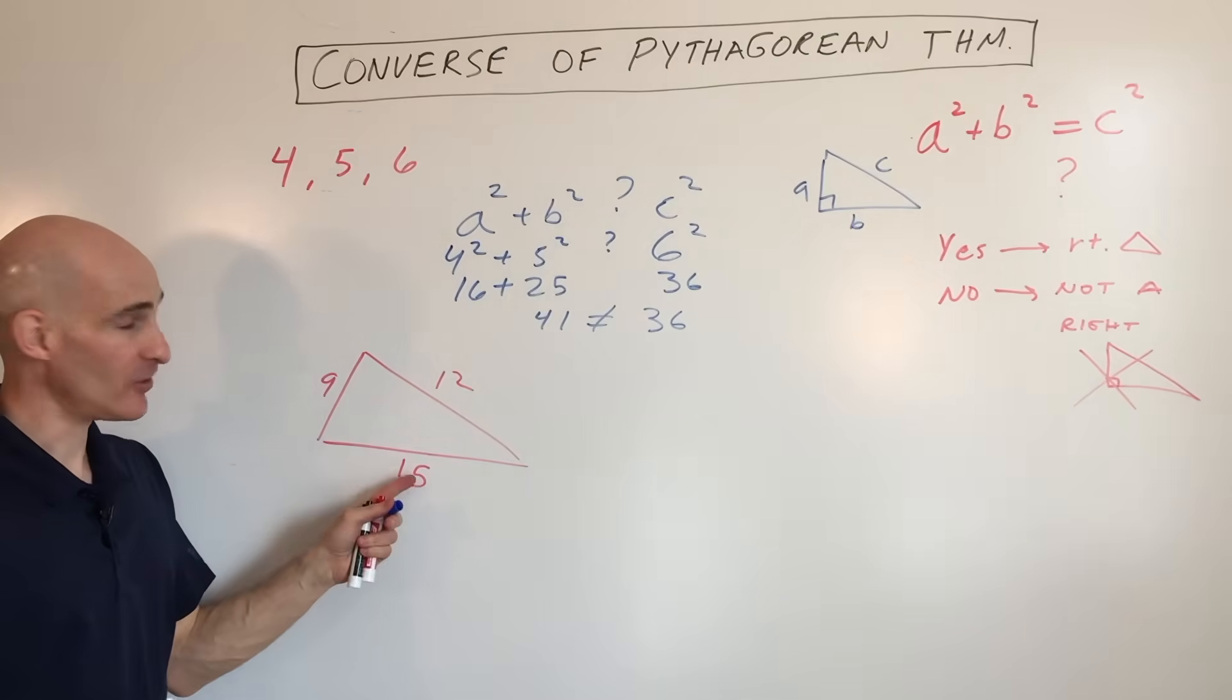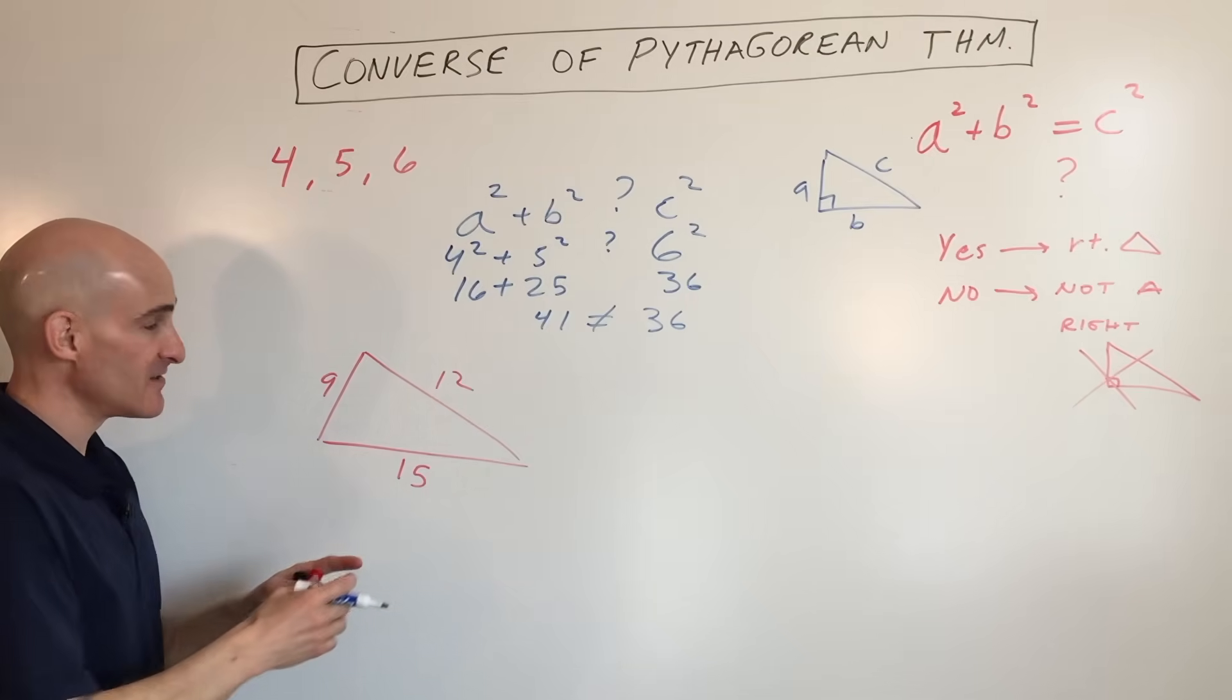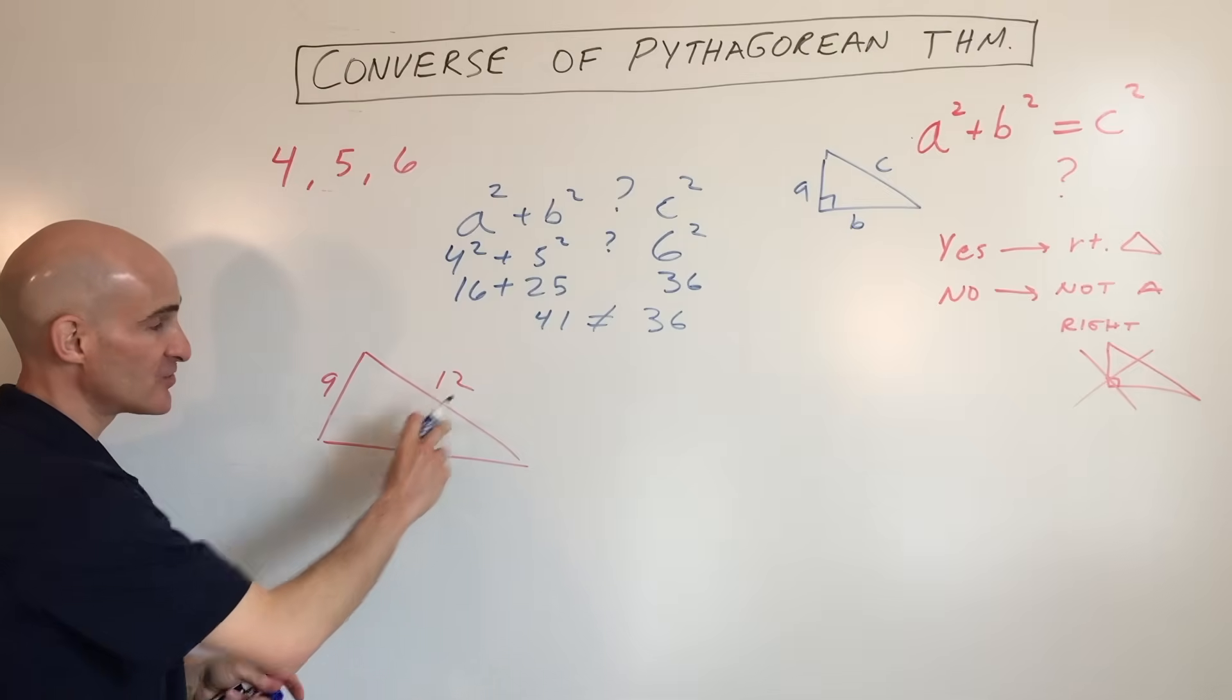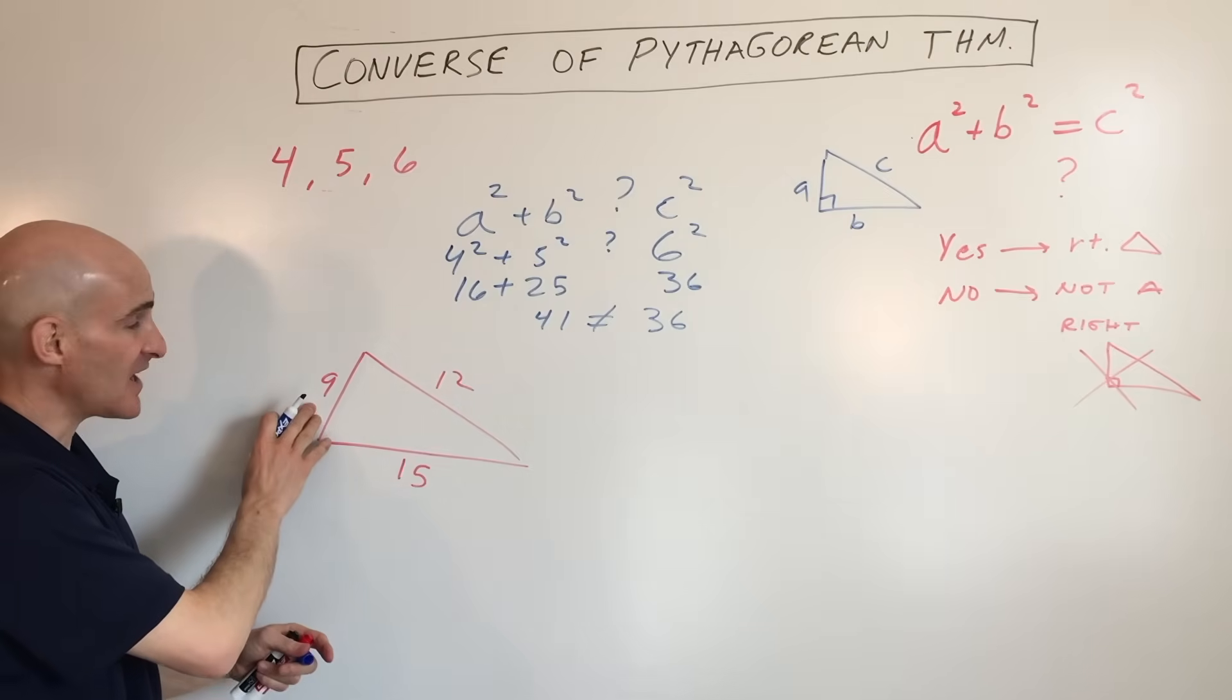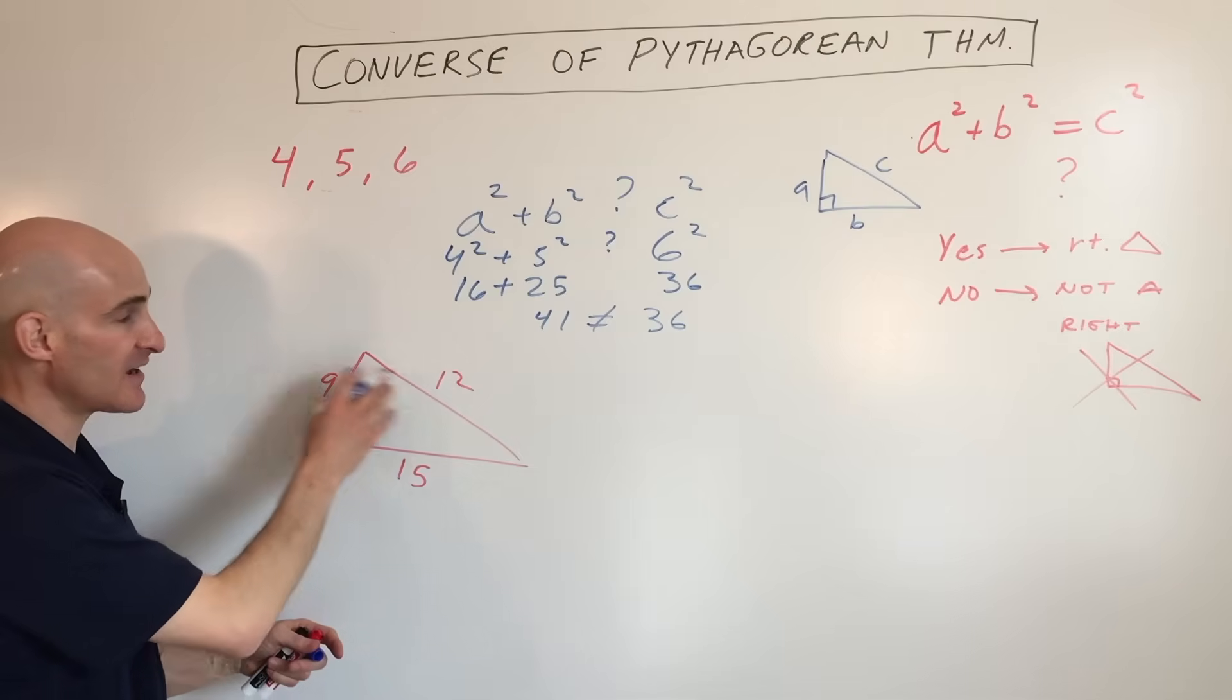Here they give us a triangle, 9, 12, and 15. Still, you want to make sure, even though they've drawn it this way, that it does form a triangle. So you add the two sides up, make sure it's more than that third side. So 9 and 15, that's more than 12. 12 and 15 added together is more than 9, and so on.